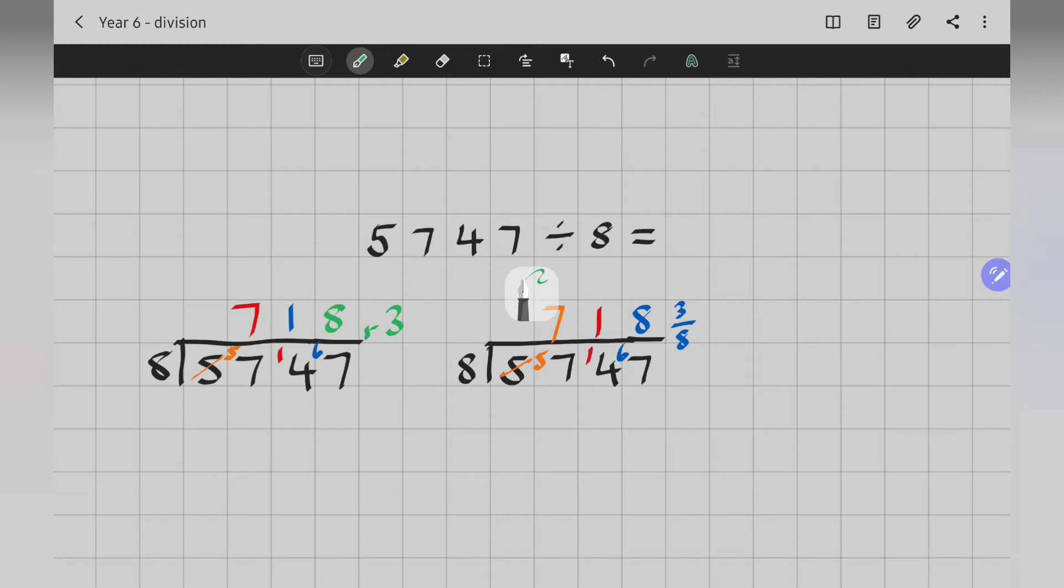Let's try our final method and show it as a decimal. So, I'm going to make my bar a bit bigger this time. That will stop. I'm still dividing by 8. 5,747. It didn't go into 5. It went into 57, 7 times with 1 left over. It went into 14 once with 6 left over. And then it went in 8 times with 3 left over. So, I put in my decimal point. Put in a 0. And I'm going to pass on those 3.